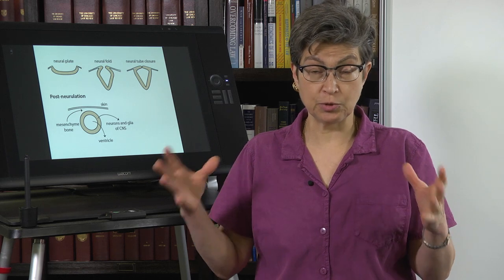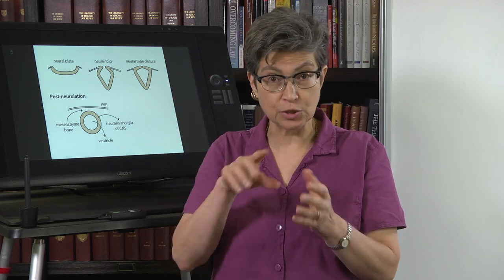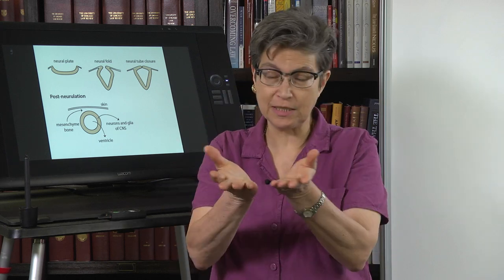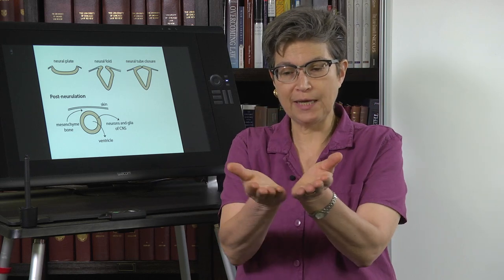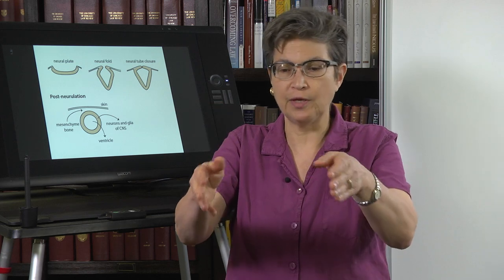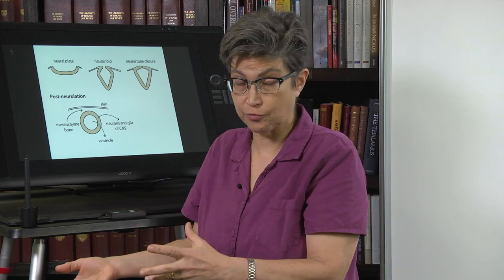The nervous system is all coming from ectoderm. What I showed you previously was the neural plate, which is on the dorsal surface of the embryo when it's about a blastocyst, and there are specialized cells. These specialized cells form a plate which then invaginates and becomes a groove, then a fold, and it eventually buds off and becomes a tube. And this tube is going to become the central nervous system.